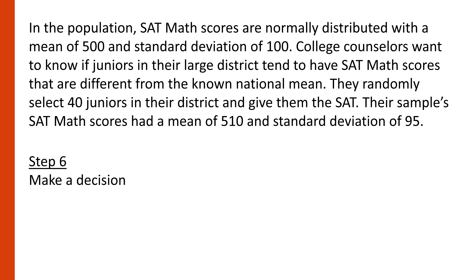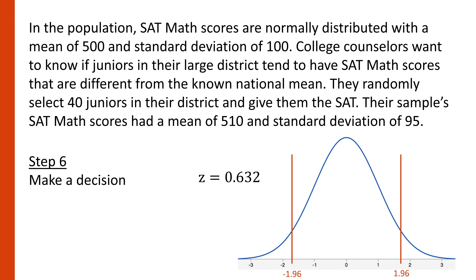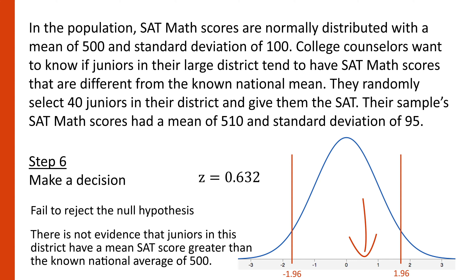Step 6: make a decision. We take our z-test statistic of 0.632 and map it onto our z-distribution with the critical values found in step 4. Because our z-test statistic is not beyond the critical values, we fail to reject the null hypothesis. There is not evidence that juniors in this district have a mean SAT score different from the known national average of 500.